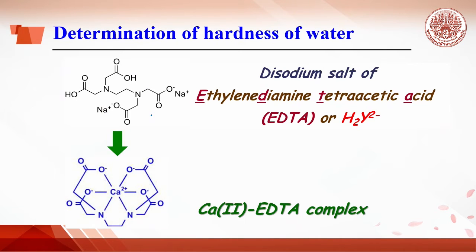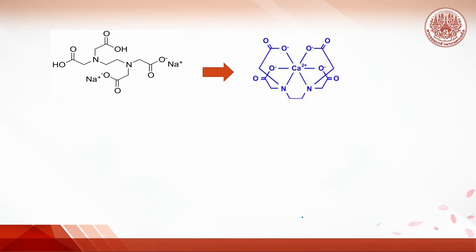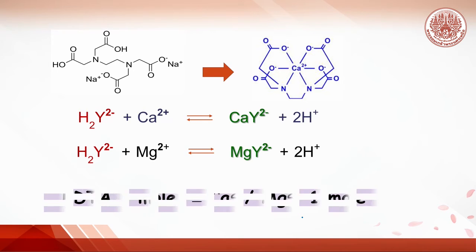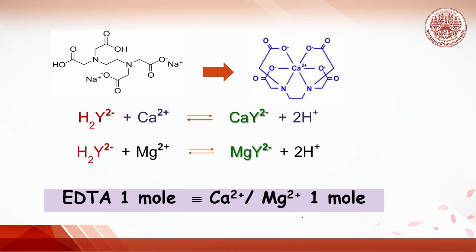Water hardness can be determined by titration with EDTA, which stands for ethylenediaminetetraacetic acid. This reagent is normally used in the form of its disodium salt. EDTA can react with calcium or magnesium ions in basic solution to form a water-soluble complex. EDTA disodium salt is present as H₂Y²⁻ ion. When it reacts with magnesium or calcium ions, the reaction ratio of EDTA to metal ion is 1 to 1 mole.